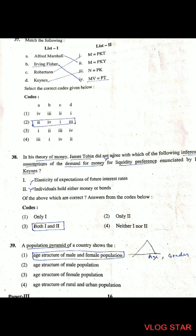Question 38: In his theory of money, James Tobin did not agree with which of the following assumptions of the demand for money for liquidity preference initiated by Lord Keynes? Both A and B are incorrect — neither 'elasticity of expectations of future interest' nor 'individuals hold either money or bonds' represents what Tobin disagreed with.